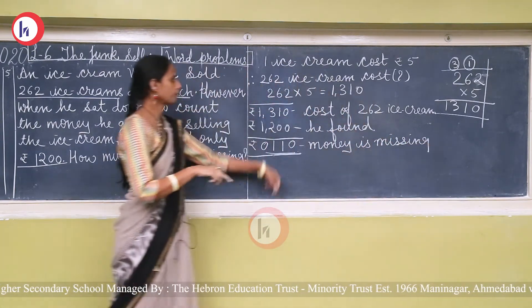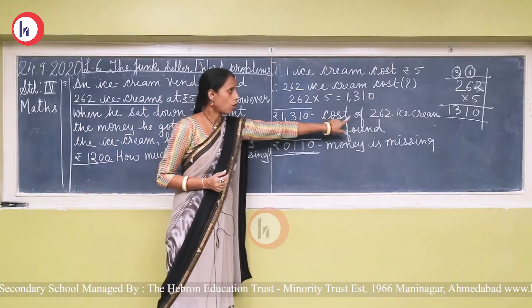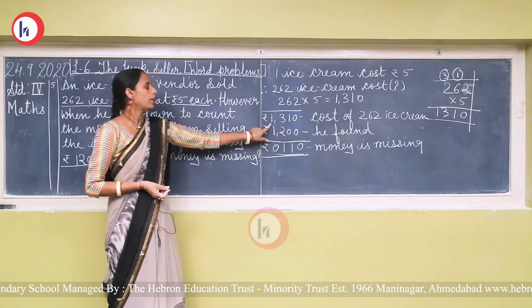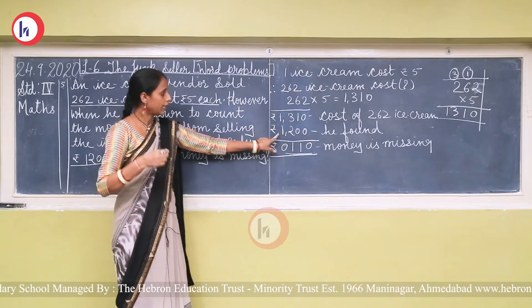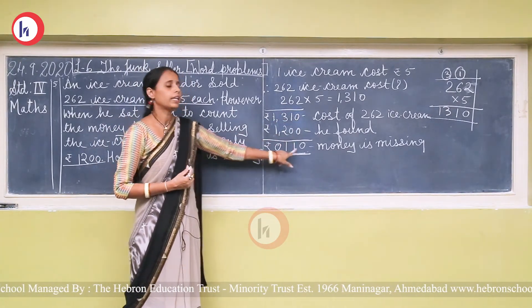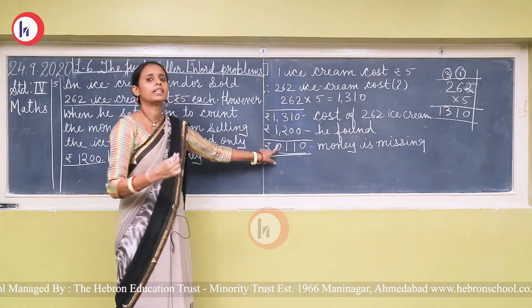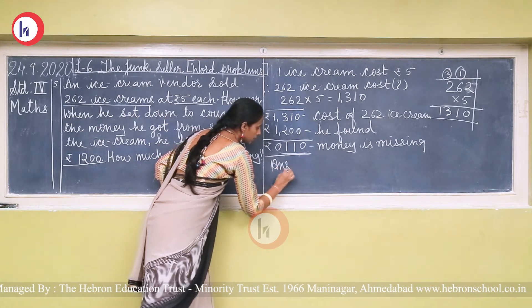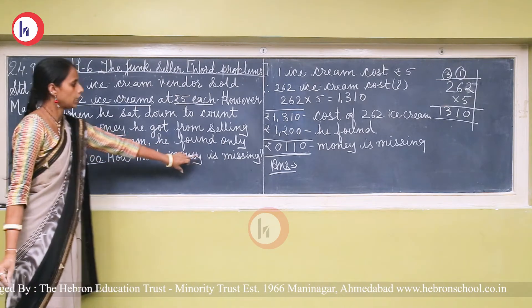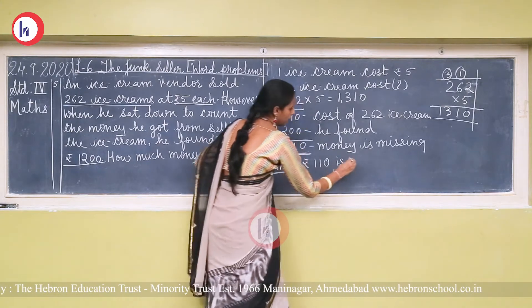The actual cost of 262 ice creams is rupees 1310. He found rupees 1200. The difference is rupees 110. So rupees one hundred and ten is missing.